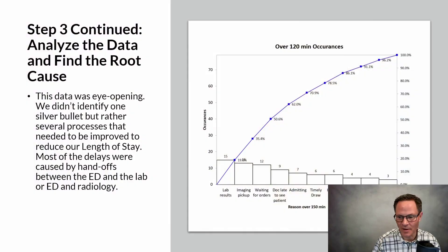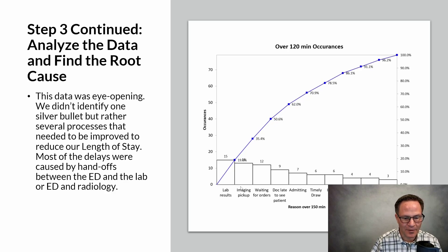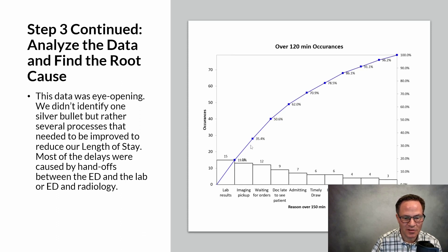It's not a silver bullet — it rarely is. You rarely have just one problem where fixing that one thing makes everything better. The Pareto gives you a priority list of things to work on and you tackle them one at a time. If we fix the lab result problem, 20 percent of patients over 120 minutes will come in under 120 minutes. Fixing the imaging pickup problem takes us to 35 percent improvement — so just those first two give us a 35 percent improvement in our process.